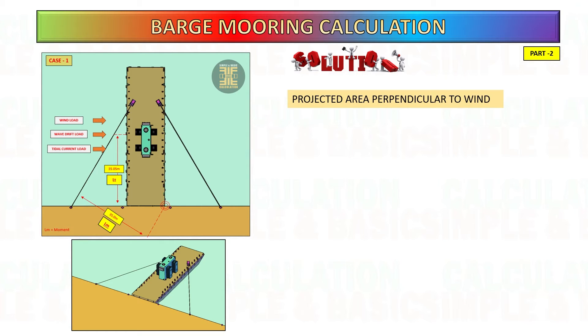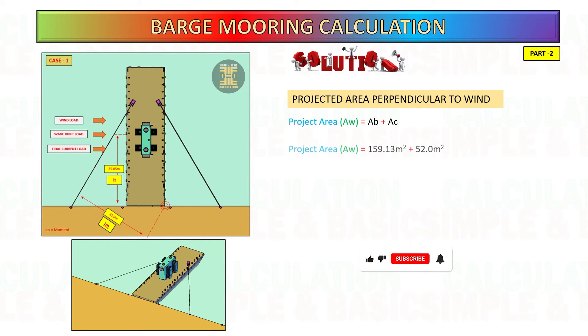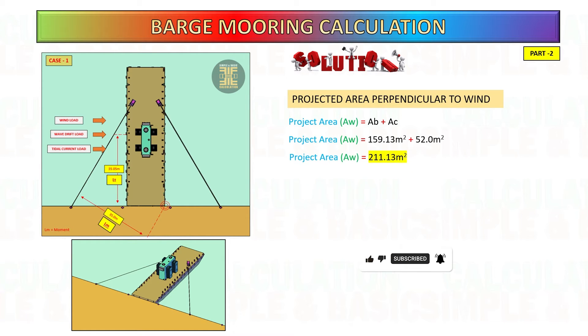Case one: calculate the projected area perpendicular to wind by adding the barge and cargo area. Consider the maximum area exposed to the wind for barge freeboard and cargo.